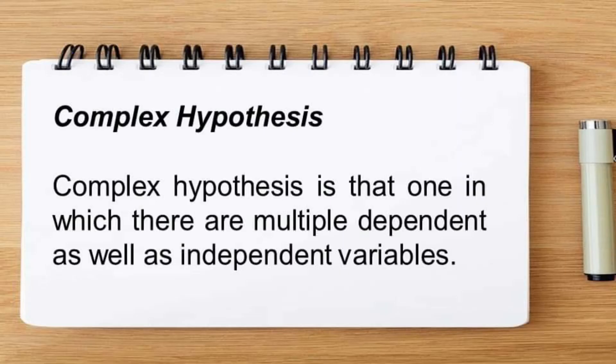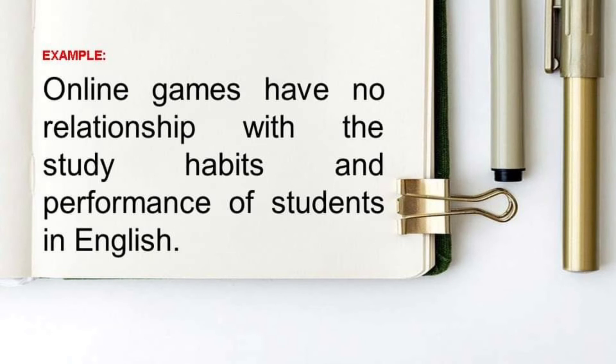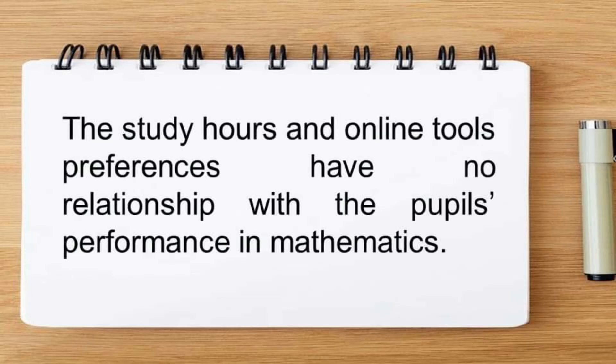A complex hypothesis is one in which there are multiple dependent as well as independent variables. For example: online games have no relationship with the study habits and performance of students in English. Here we have one independent variable — online games — and two dependent variables: study habits and performance. Another example: the study hours and online tools preferences have no relationship with the pupils' performance in mathematics. In this example, we have two independent variables — study hours and online tools preference — and one dependent variable: pupils' performance.